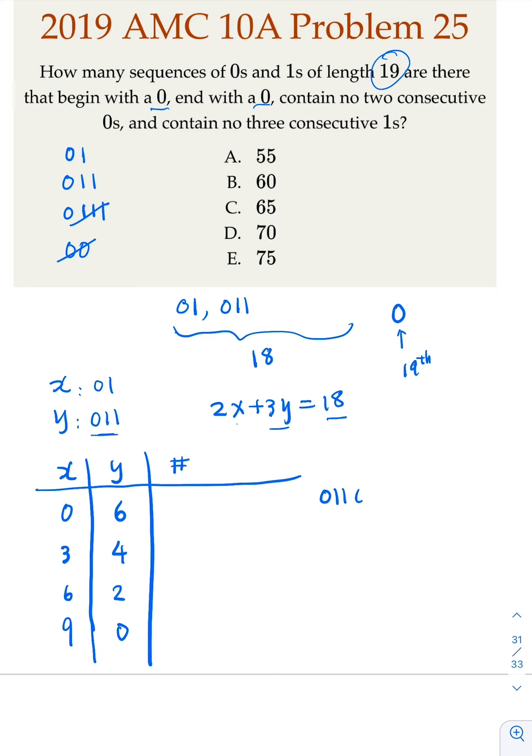So you have 0, 1, 1, 0, 1, 1. You have 6 of them. That's 18 characters. And then you have 0 at the end. So there's only one way.